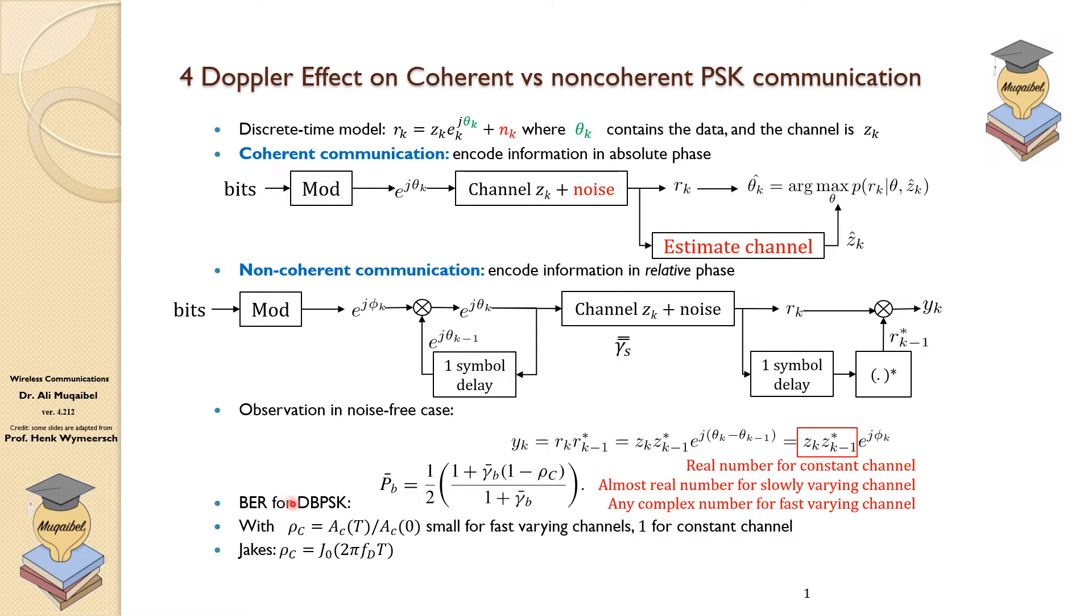The performance for the bit error rate for DBPSK without going into the derivation is given by the following formula, where gamma_B is the energy per bit, and rho_C depends on how fast the channel changes. So it depends on the autocorrelation at T at the end of the period compared with the autocorrelation at 0. So this is small for fast varying channel, and it's one for constant channel. So if you want the performance for non-changing channel, you have one here, this is going to cancel out.